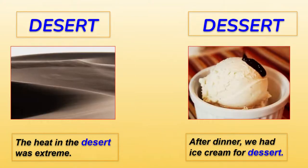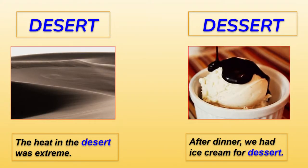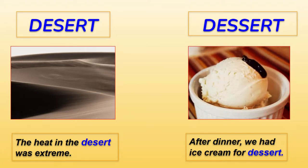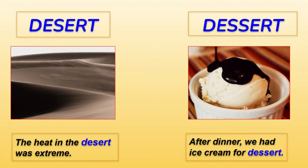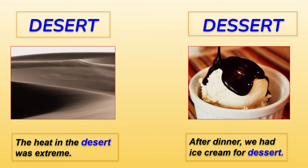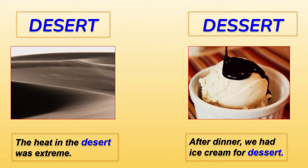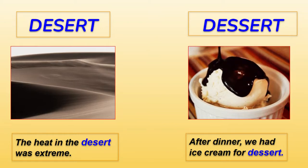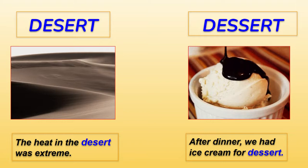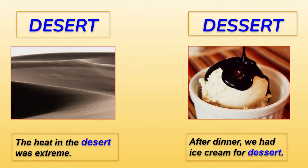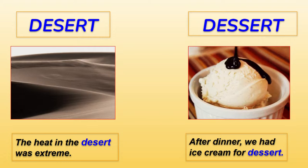Homophones are basically a pair of words where the pronunciation is the same — it's identical — but the meaning and spellings are different. Now here: 'desert' and 'dessert.' D-E-S-E-R-T is when we are talking about a sandy desert, like the Thar Desert in Rajasthan with muddy, small granules of sand. The other — D-E-S-S-E-R-T — is what you love to eat after dinner: your ice cream, a nice scoop with hot chocolate.